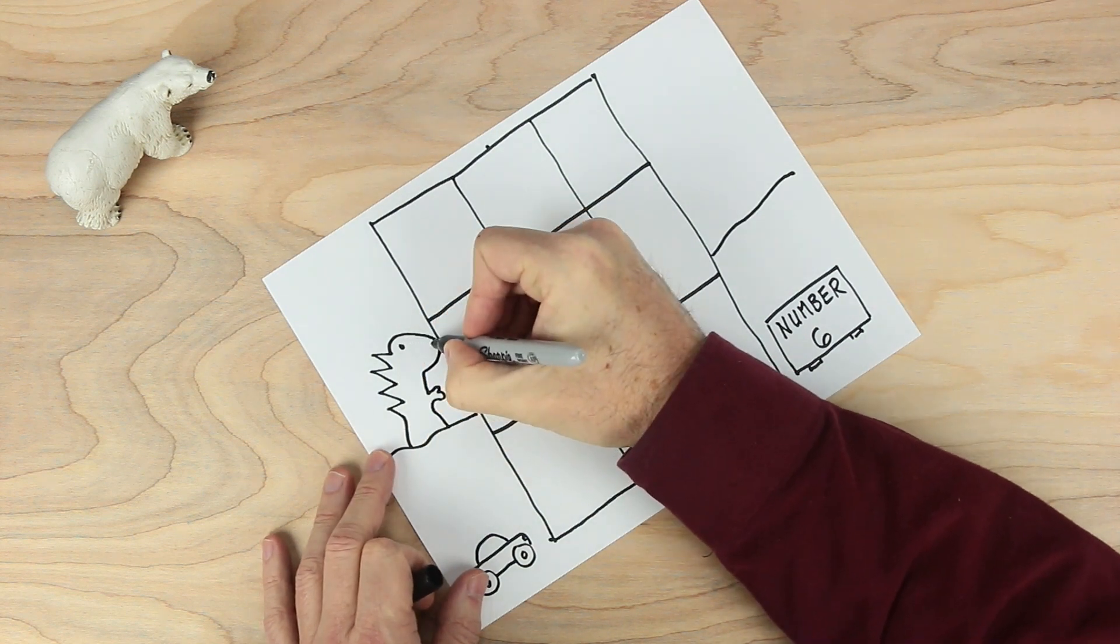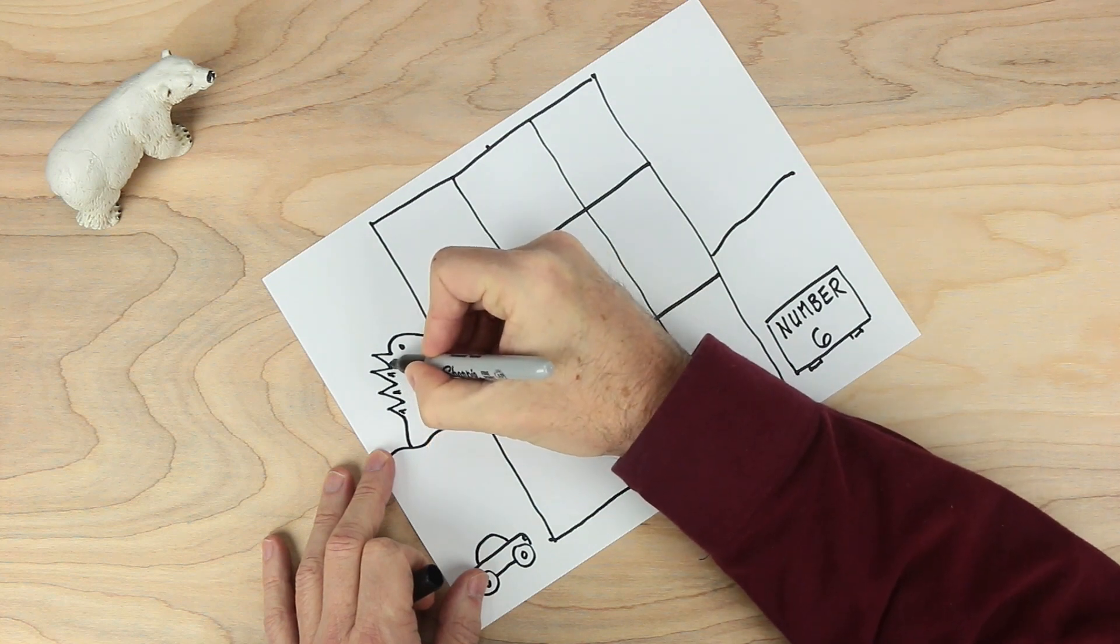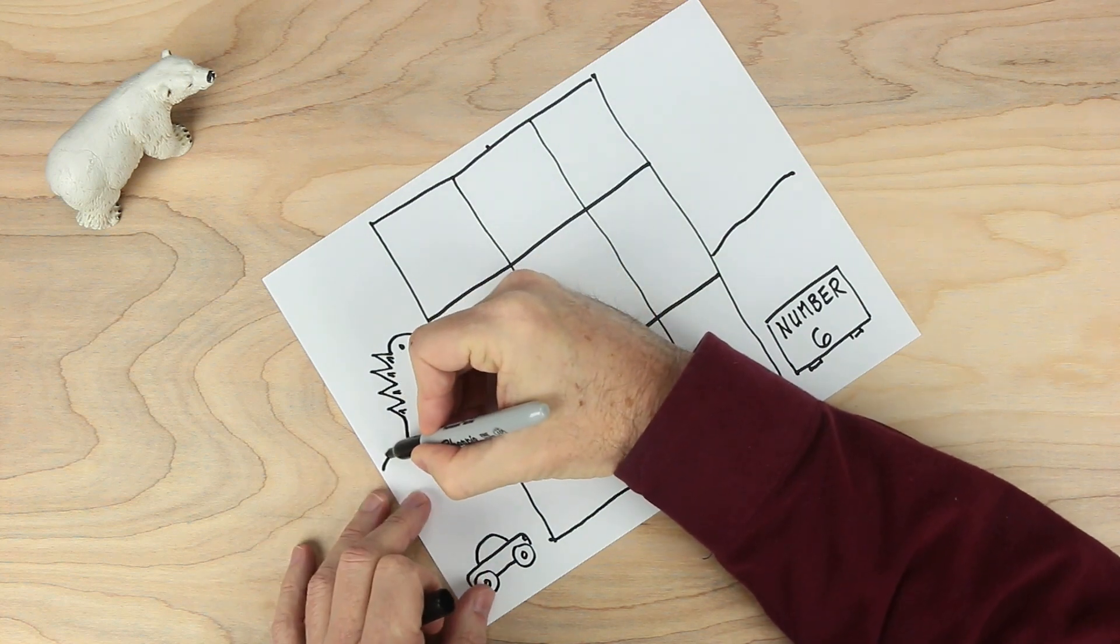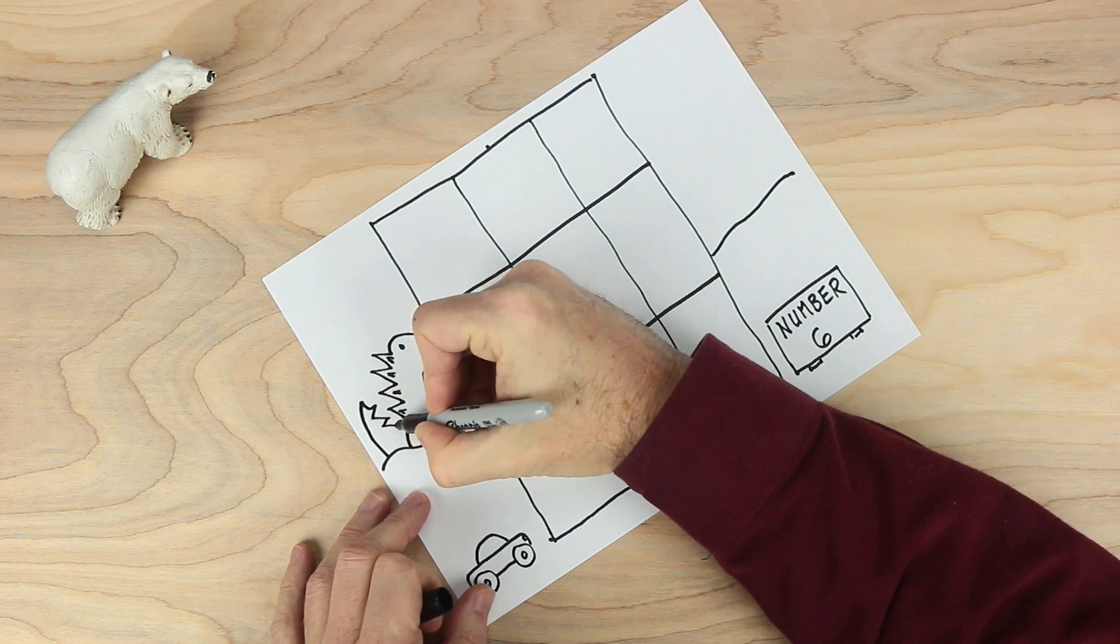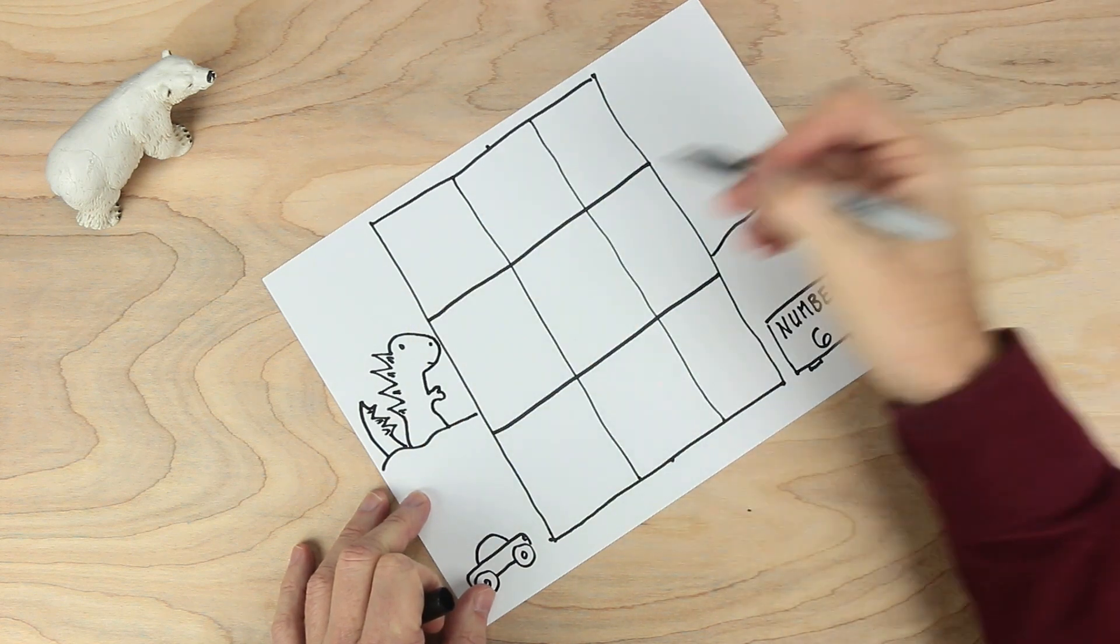I see what it is. And maybe some of these. And don't forget this. Can't forget that part. What else do we need? Maybe some mountains.